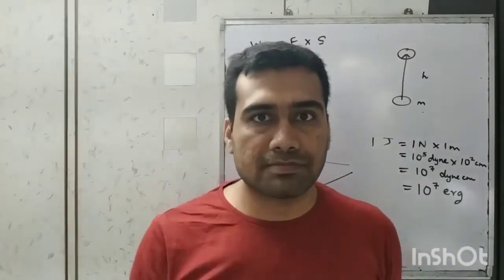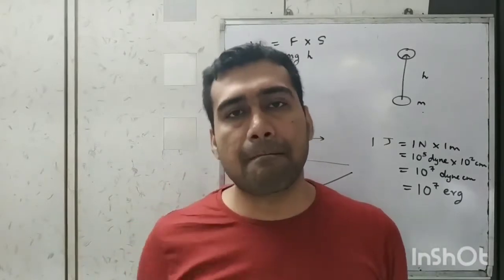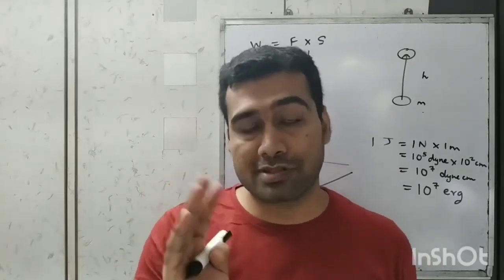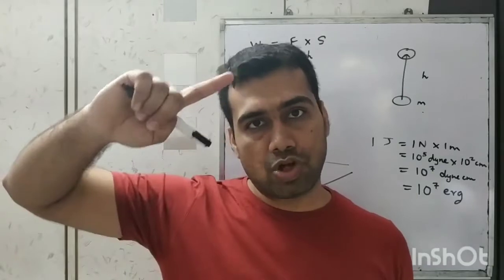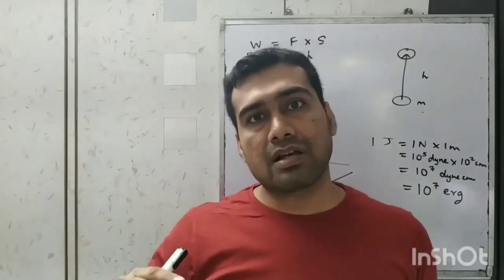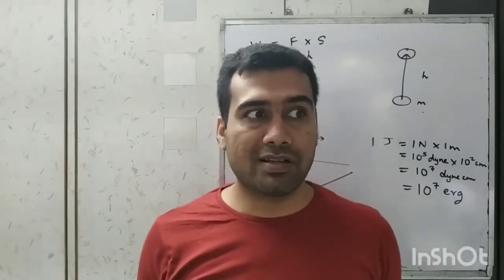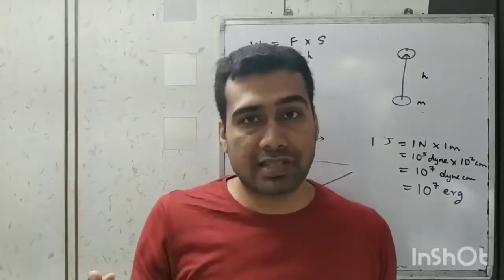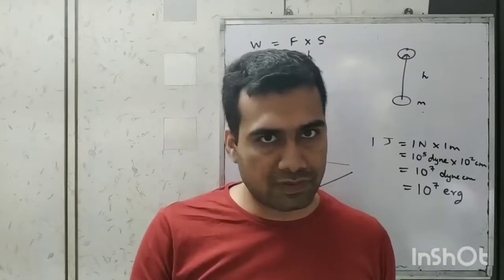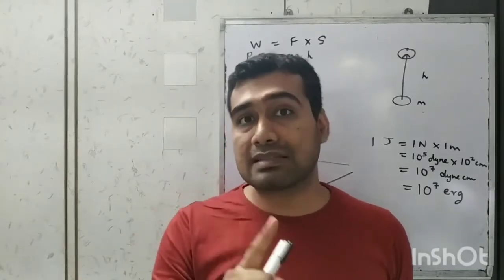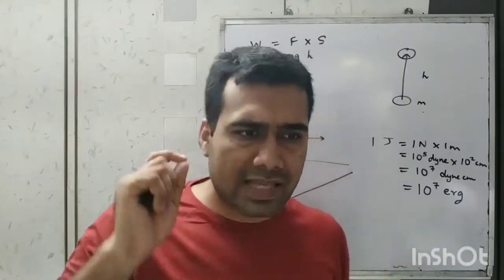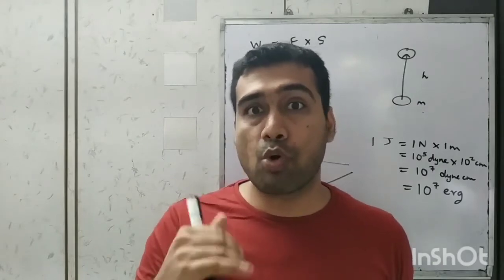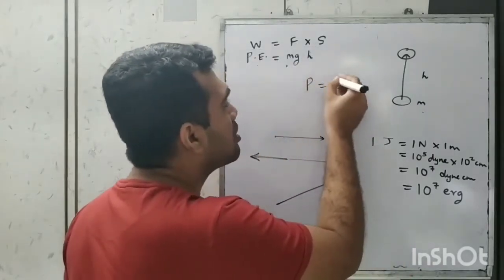Now there is the concept of power. Imagine two people of the same weight who both have to climb twenty floors. Person A climbs to the top in five minutes while person B takes fifteen minutes. Both have done the same work — same force (their weight) and same displacement (twenty floors) — but since A did the work in a smaller interval of time, A has exerted more power. So power = work / time.